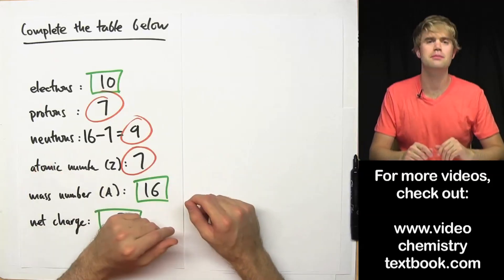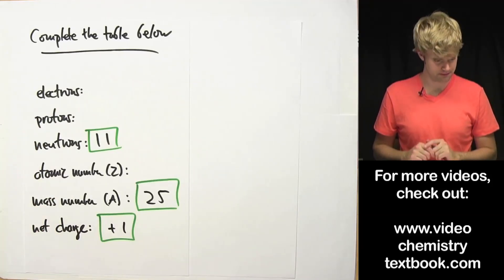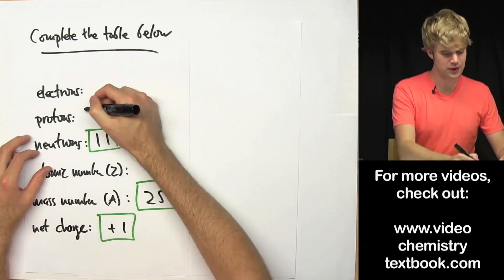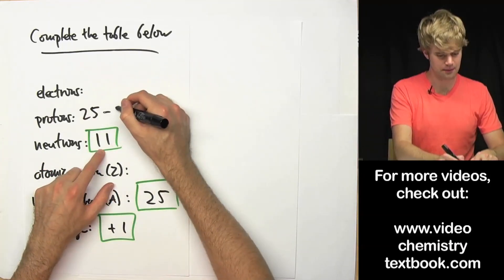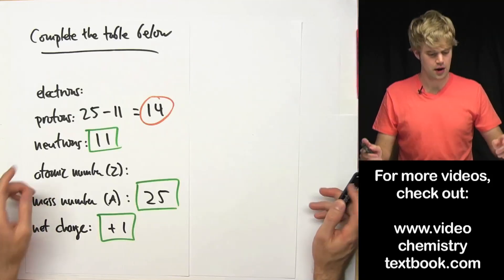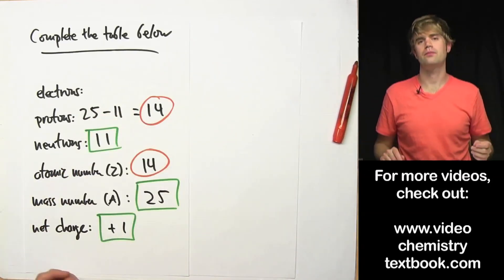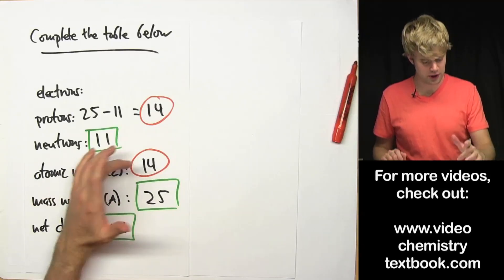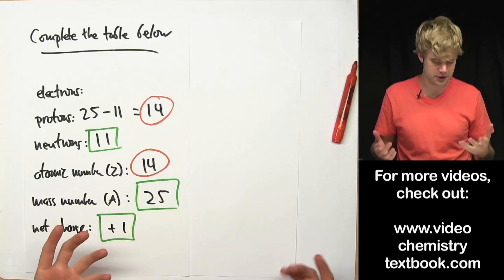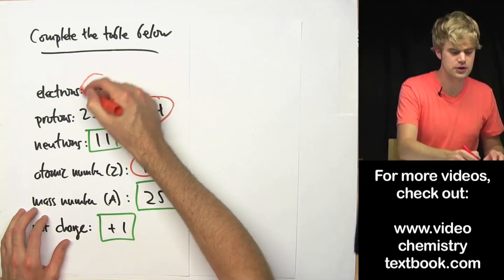Sometimes these table problems can be the hardest, so we'll do one more example. Here we want to find the electrons, protons, and the atomic number. We know the neutrons, the mass number, and the net charge. Let's start with protons. We know the mass number — protons plus neutrons — and we know the number of neutrons. So we can take 25, which is protons plus neutrons, and subtract the number of neutrons: 25 minus 11 gives us 14 — that's the number of protons alone. Atomic number is just another word for protons, so these both are going to be 14. Now that we know the number of protons in the nucleus, we can use the net charge to figure out the number of electrons. It's a net charge of plus 1, which means there should be one more proton than electron. So with 14 protons, that means I'm going to have 13 electrons.